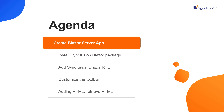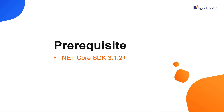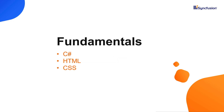Now, let me create the Blazor project first. I can create a Blazor application either using Visual Studio 2019 or Visual Studio Code. In this video, I'll create a server-side Blazor application using Visual Studio 2019. Make sure that you have installed .NET Core SDK 3.1.2 or later versions. To follow along with this video, one should have a basic understanding of C Sharp, HTML, and CSS.